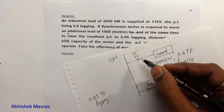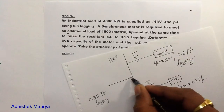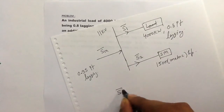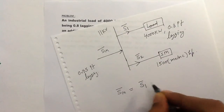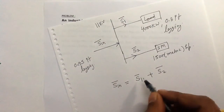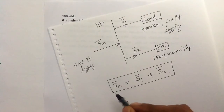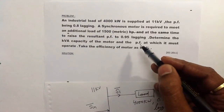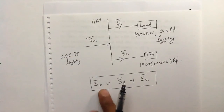The sum of the complex power drawn by the load and the synchronous motor is fed at the 11 kV terminal. We can write: the complex power input equals complex power drawn by the load plus complex power drawn by the synchronous motor. If we are able to write this equation, we can find out the kVA capacity of the motor and the power factor at which the synchronous motor is operating. So let us write the values of S_input, S1, and S2.